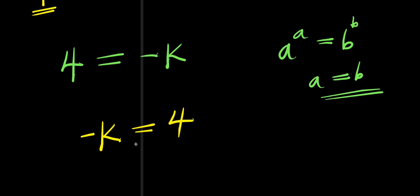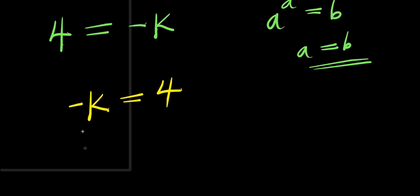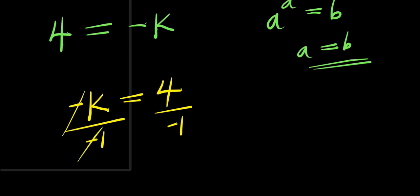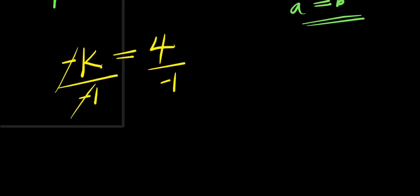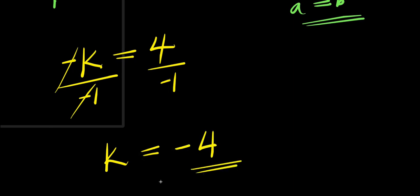From here you can solve for k. You eliminate this negative by dividing by negative 1 and dividing this by negative 1. So we have k equals 4 divided by negative 1, that is negative 4.